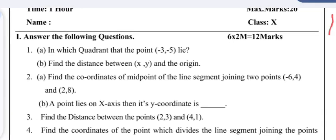Section 1: answer the questions — 6 into 2 equals 12 marks, meaning 6 questions of 2 marks each. Question 1: In which quadrant does the point (−3, −5) lie? As both x and y coordinates are negative, it lies in Q3, that is the third quadrant. Question 2: Find the distance between point (x, y) and the origin.